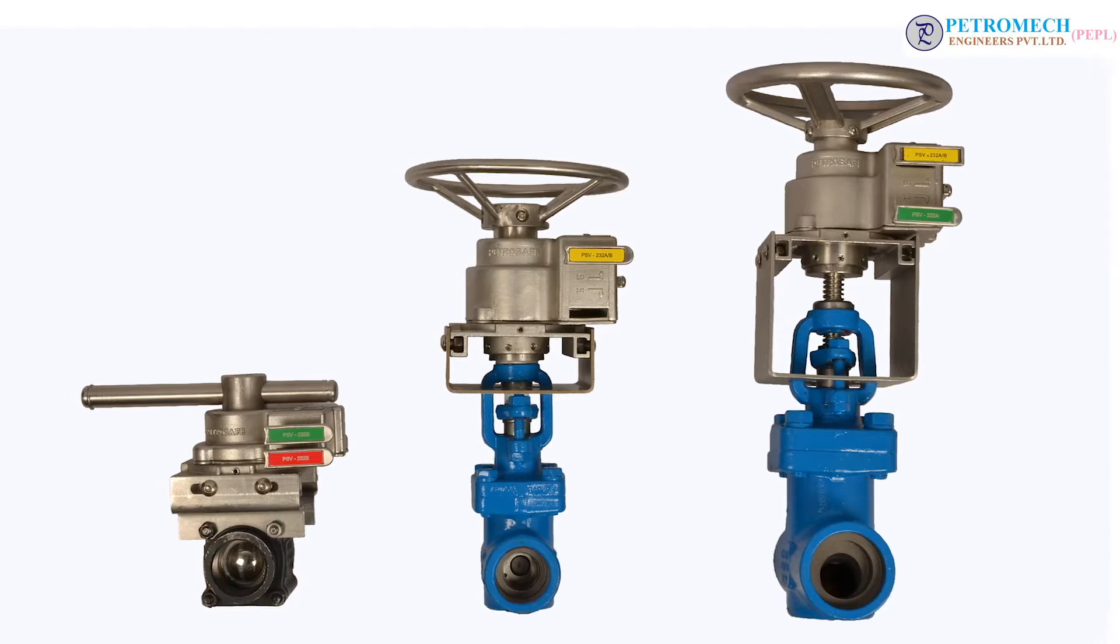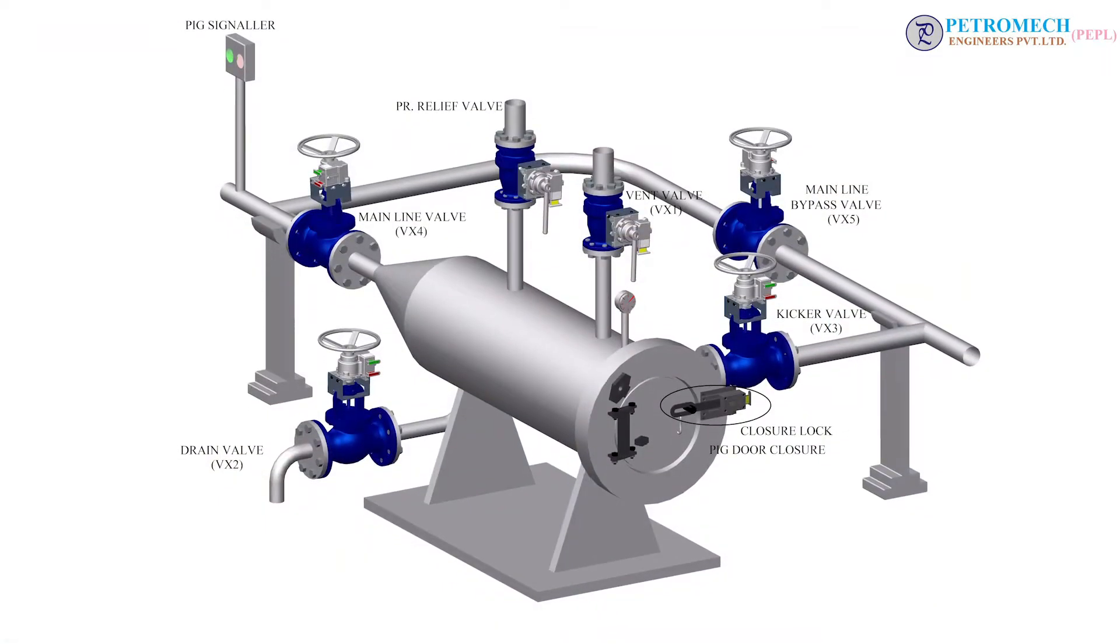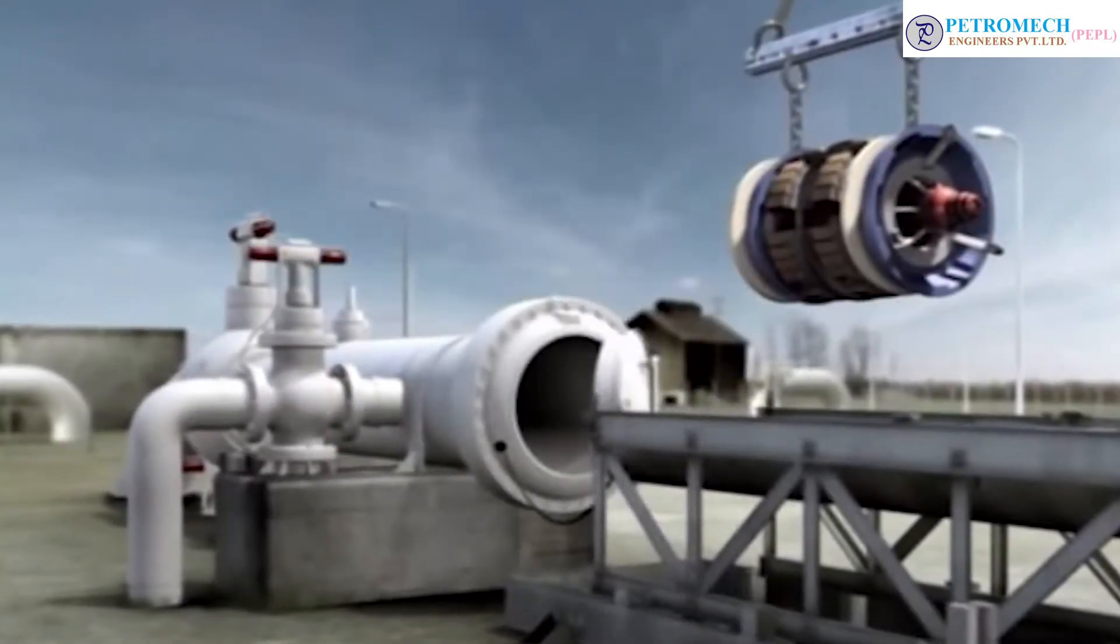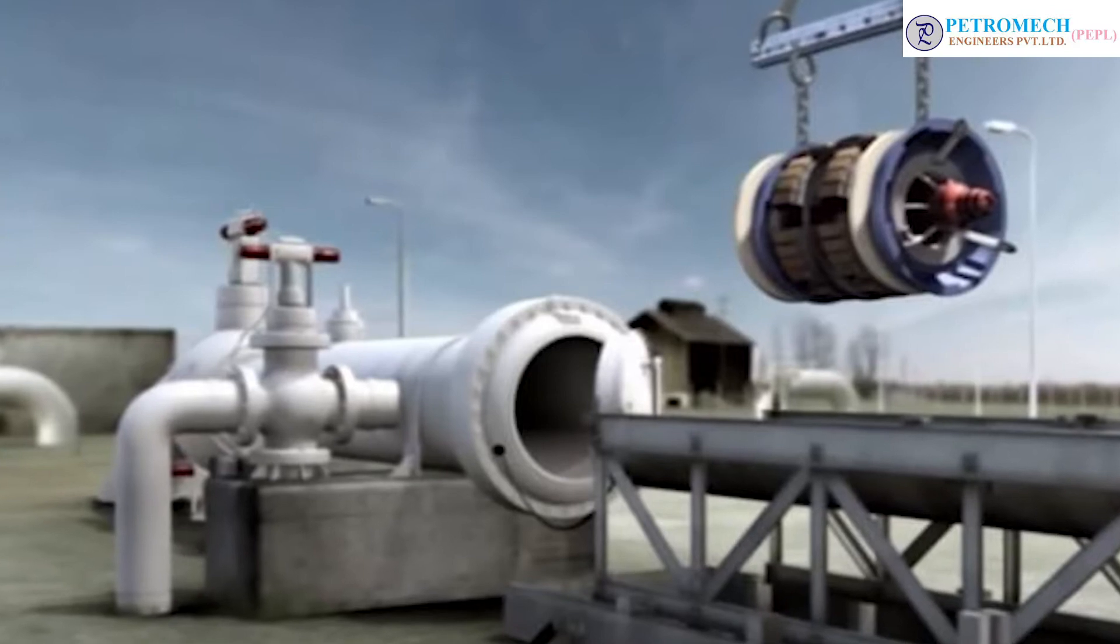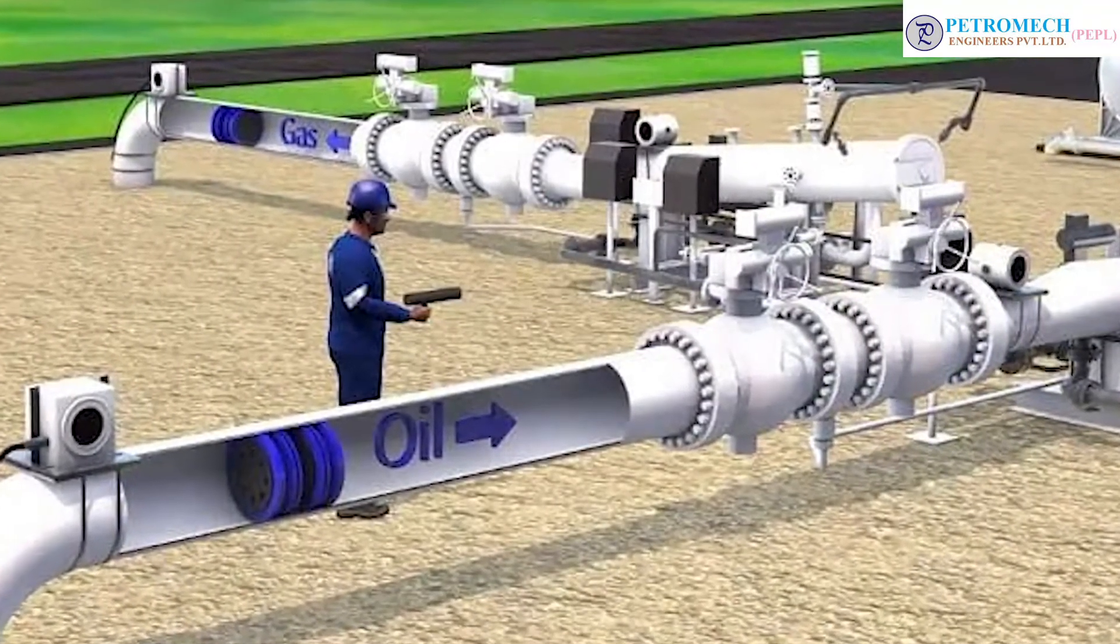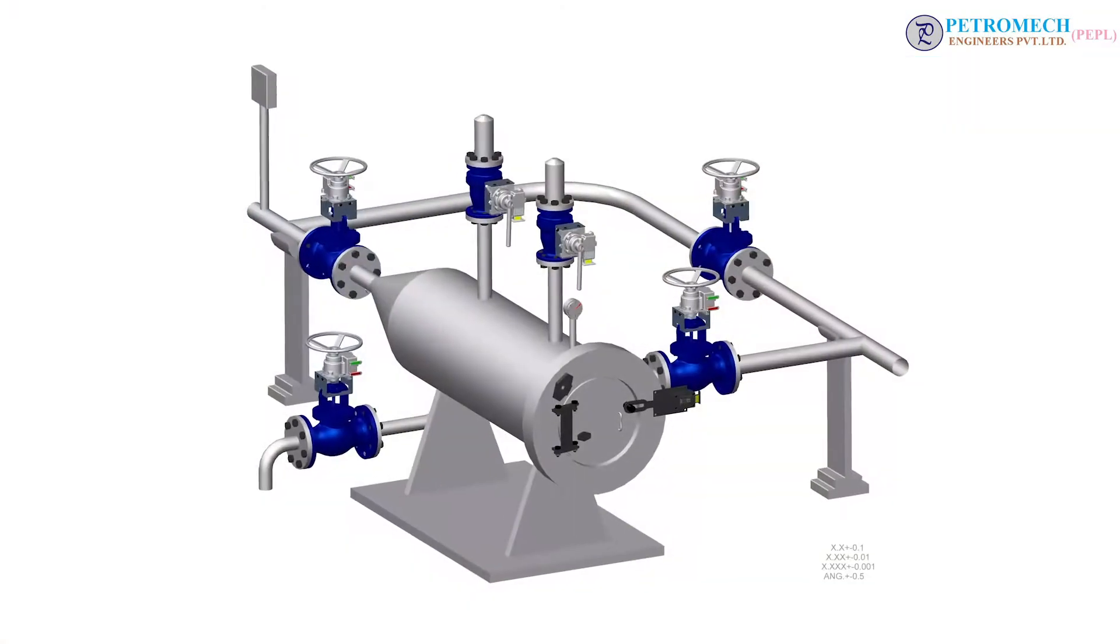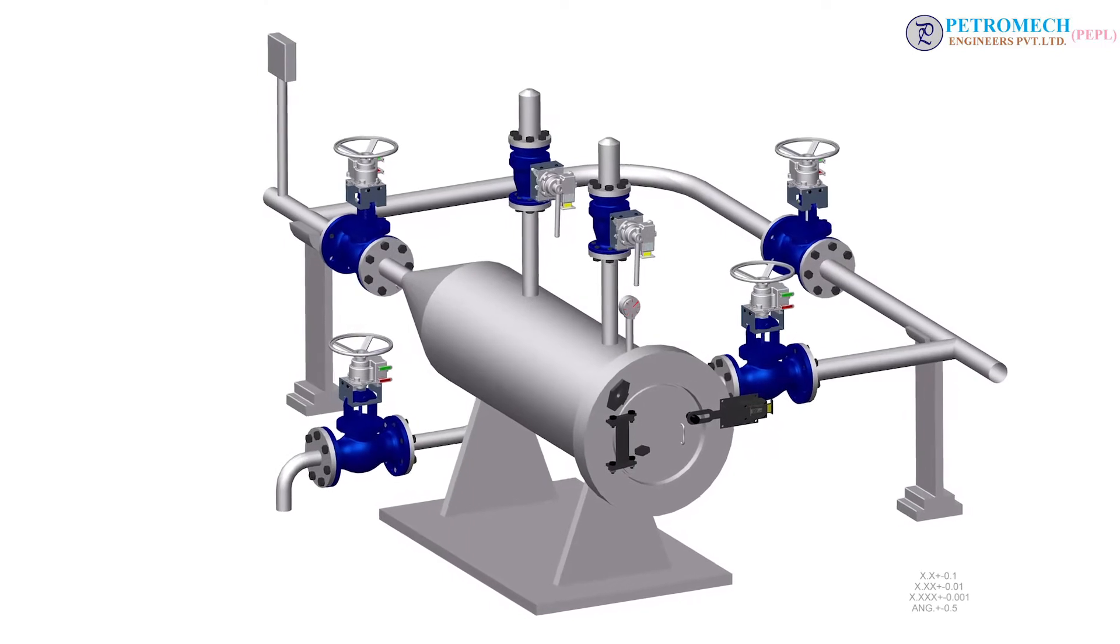Mechanical valve interlocking system ensures that the operator follows the predetermined sequence to eliminate any chance of accidents. Pig launching procedure is subdivided into following tasks: depressurizing and loading the pig launcher, repressurizing the pig launcher, launching the pig and isolate the pig launcher.